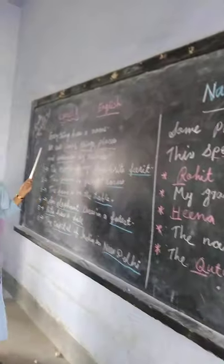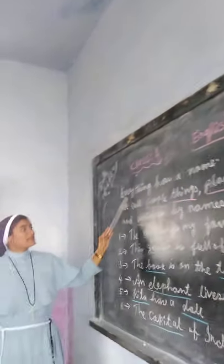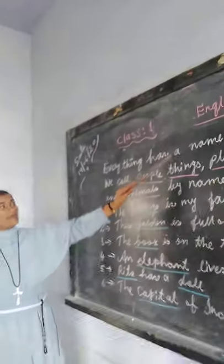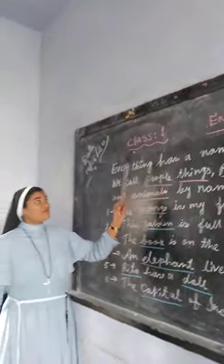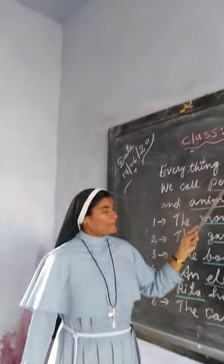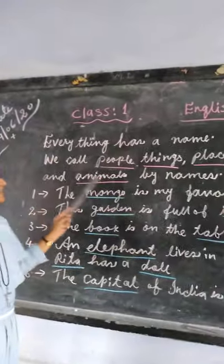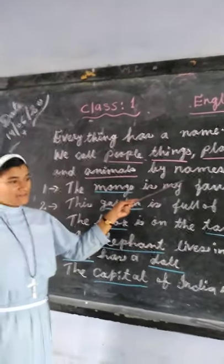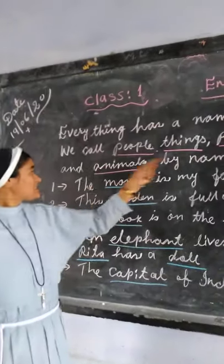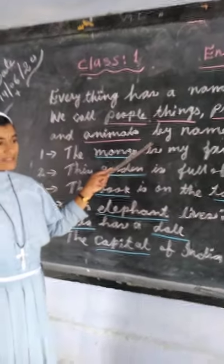From the definition you can see: everything has a name. We call people, things, places, and animals by names. Everything has a name. We call people, things, places, and animals by names.